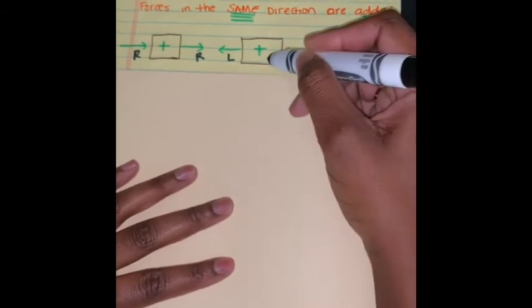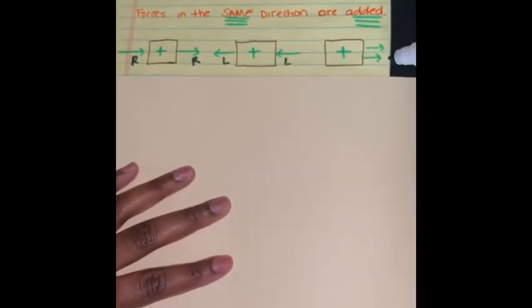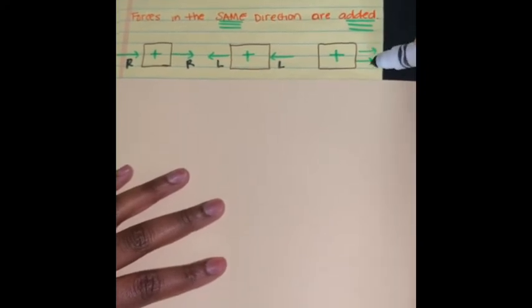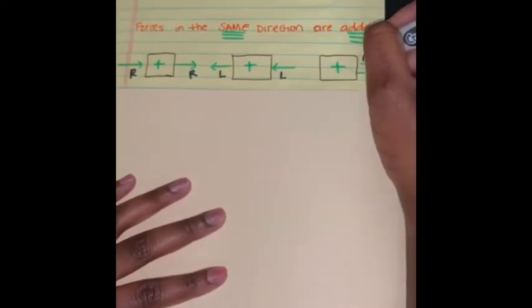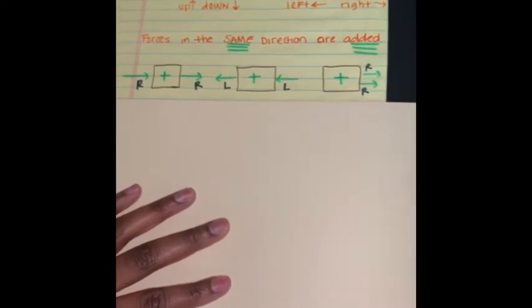I have another example demonstrating that they are both going to the left. We have to make sure that we add these forces. Again, the last example, if we have forces on the same side and they're both heading to the right direction, then we still have to add.